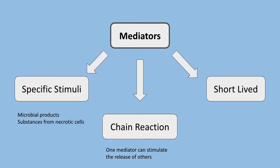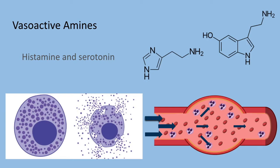The first mediators discussed are vasoactive amines. The two major vasoactive amines — named for their important actions on blood vessels — are histamine and serotonin. These are stored as preformed molecules within cells and are among the first mediators released during inflammation. Histamine is stored in mast cell granules and can be released by degranulation in response to a variety of stimuli, including antibody binding in allergic reactions and products of complement. Histamine causes dilation of arterioles and increases permeability of venules, and is considered the primary mediator of the immediate transient phase of increased vascular permeability.